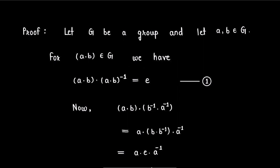Now we have for the element a·b in G, (a·b)·(a·b)^(-1) is equal to identity. We will call this expression as 1.